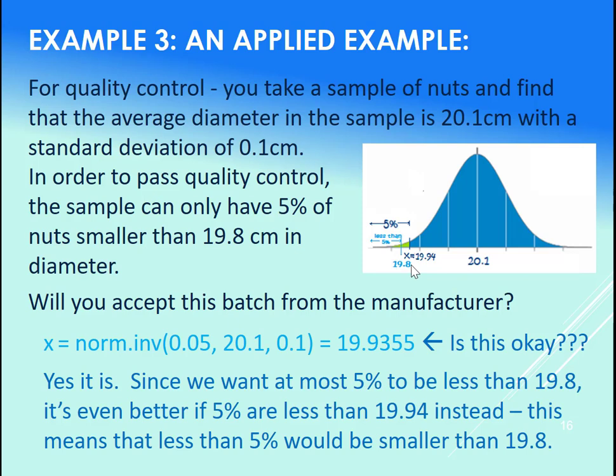That is good. 19.8 is kind of our cutoff for a defective nut that won't fit on our bolt that we specifically need a nut for. So since 19.94 is larger, that is good in this case. That makes sure that less than 5% of the nuts are smaller than 19.8.